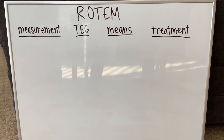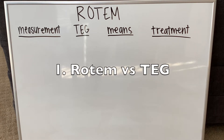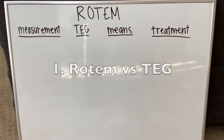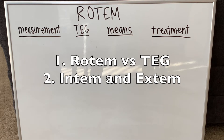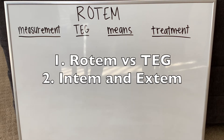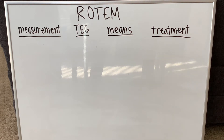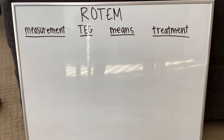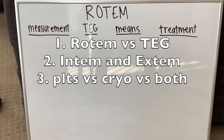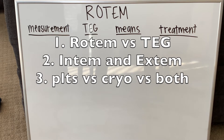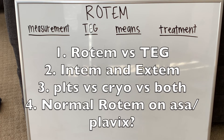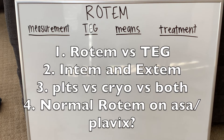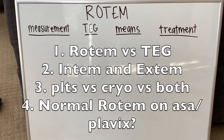So we're going to go over four different things. The first is the measurement on ROTEM, what it equals, what that means, and how to treat it. The second is the different assays — the Intem and Extem families on ROTEM, the different parts of both, and how to interpret those with pictures. The third is how to determine if you need platelets versus cryo, where the A10 level is helpful. And the last thing is why you can't see the effects of things like Plavix, aspirin, and other oral medications.